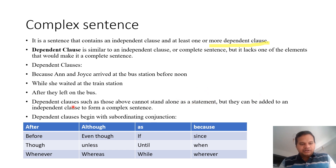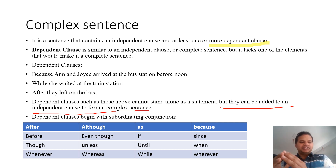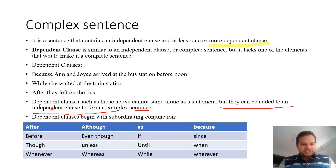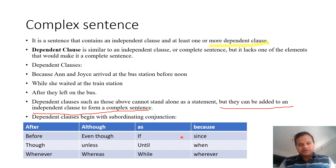Dependent clauses can be added to an independent clause to form a complex sentence, because they do not have the elements to withstand alone. Dependent clauses begin with subordinating conjunctions — words like: after, although, as, because, before, even though, if, since, though, unless, until, when, whenever, whereas, while, and wherever.